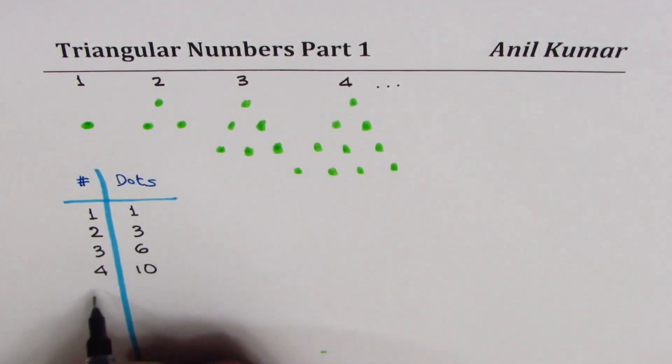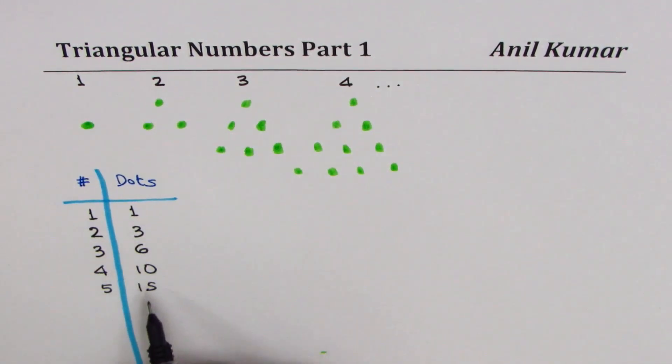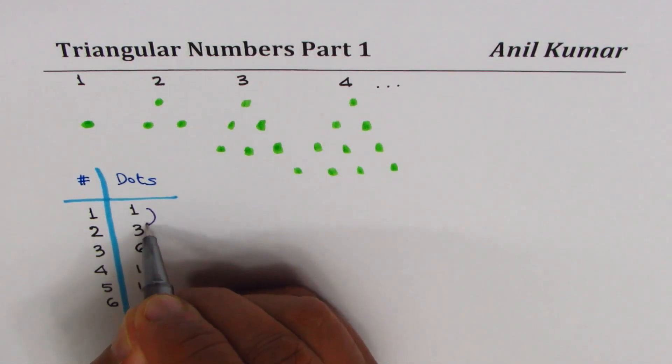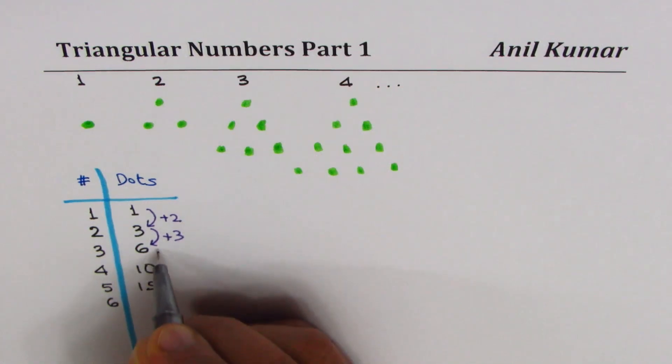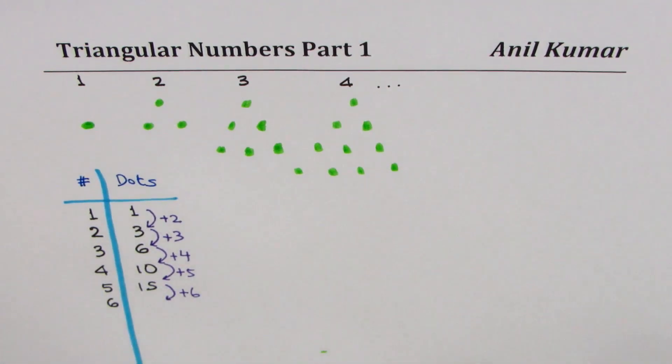So in five, if we keep on adding one more each time, then we can form a pattern. In sixth, we are going to have how many? So what we see here is that as we move on, first we added two dots, then we added three dots, and then four, five, and now we should add six. So 15 plus 6 is 21, and likewise, we can grow this pattern and find the number of dots.